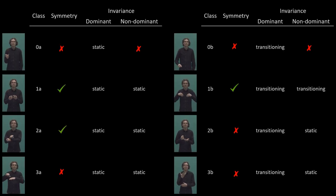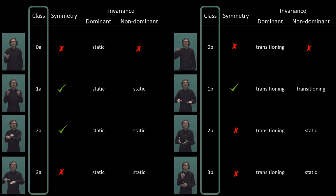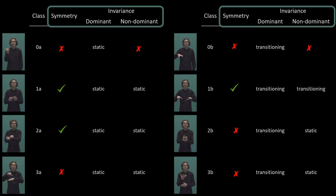We build on universal linguistic rules from sign language literature to group signs into eight classes. We then introduce hand pose constraints on these classes. Our constraints exploit hand pose symmetry and hand pose invariance of the dominant and non-dominant hands.